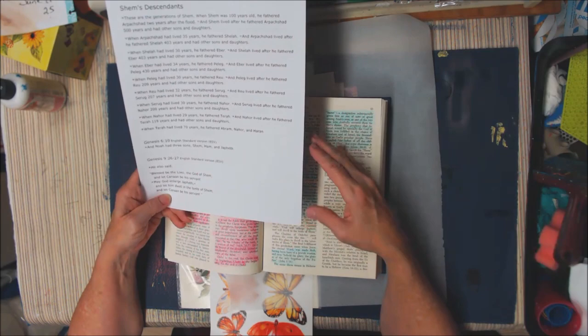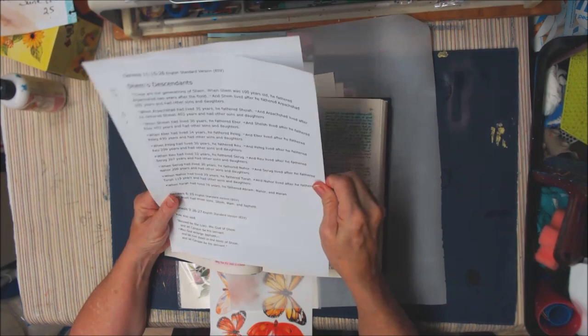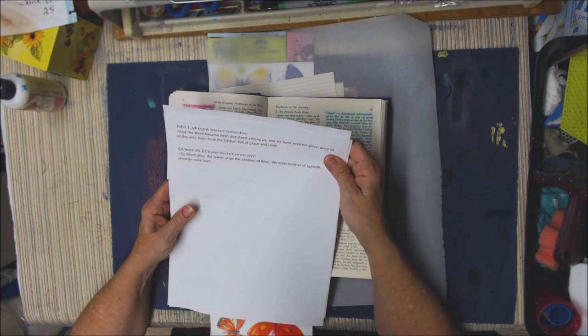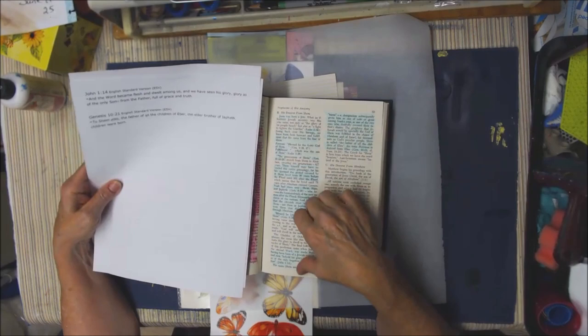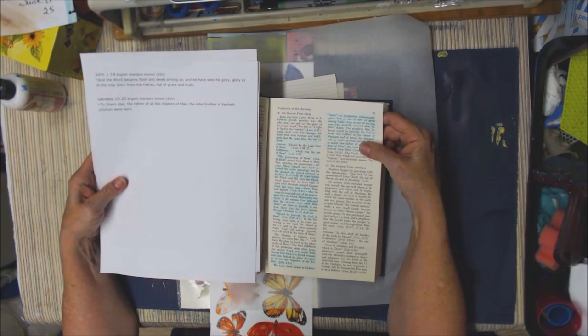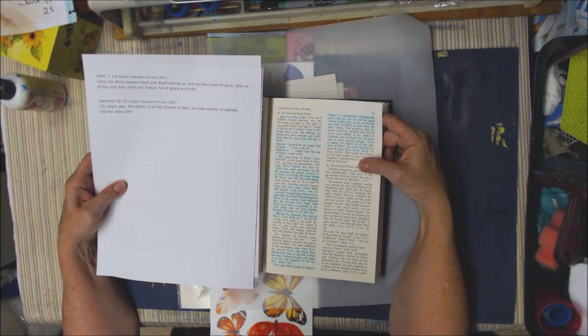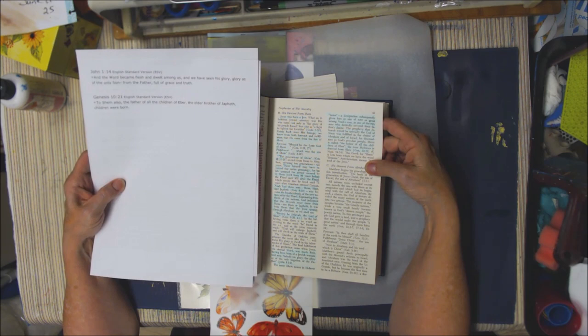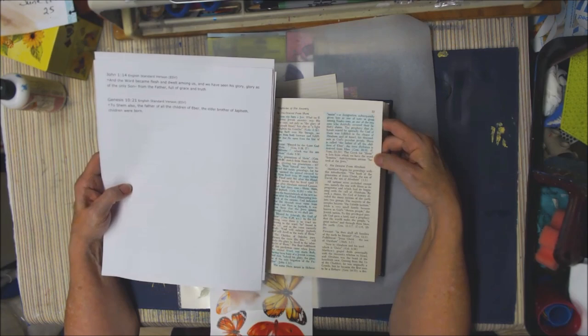The final fulfillment of this prediction came when Jesus, the eternal word, was made flesh, having been born of a Jewish woman. John 1:14 says, And the word became flesh and dwelt among us, and we have seen his glory, glory as of the only son from the Father, full of grace and truth. The name Shem in Hebrew means name, a designation subsequently given to him as one of note or of great among Noah's sons. Shem is called the father of all the children of Eber. The term Hebrews is derived from the term Eber.